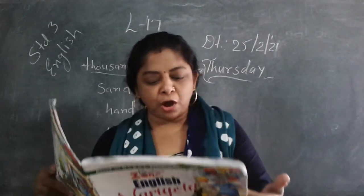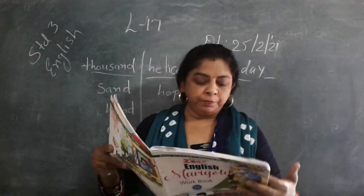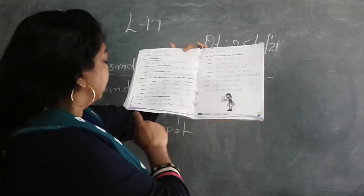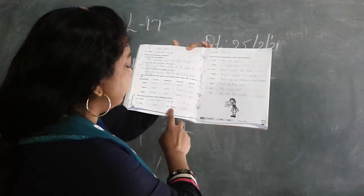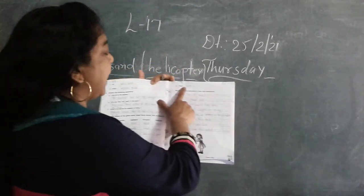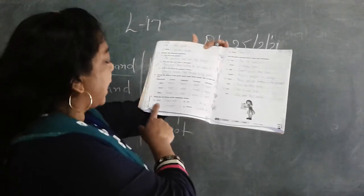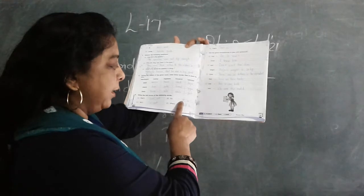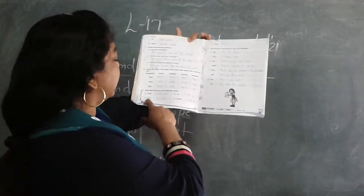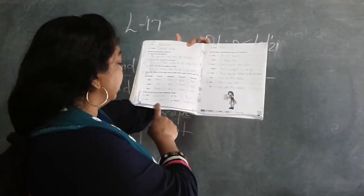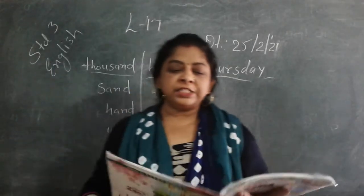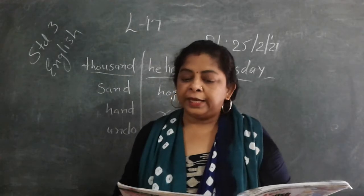Ok students. Now question number 6, write the full forms of the following words. Can't. So full form is cannot. B is it's. Full form is it is. C is isn't. Full form is is not. And D what's. Full form is what is. And last one is that's. Full form is that is. Now can't you have to say cannot. It's you have to say it is full form. Can't full form is cannot. It's correct it is. Isn't correct is not. And what's correct what is. And last one is that's, that is.